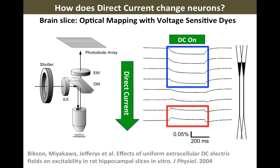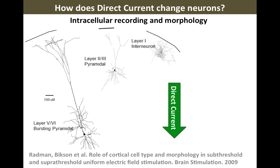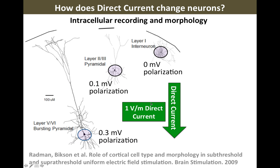How much is this seesaw polarization? We can ask that question using intracellular recording. These are examples of cells that are morphologically reconstructed, and we recorded from their soma during the application of direct current stimulation. In the soma, the most sensitive cells — the very large pyramidal cells — polarize 0.3 millivolts per 1 volt per meter of direct current stimulation. Other cell types, not as large, polarized even less — only 0.1 millivolt for the same field. Some cells, their somas didn't polarize at all when we applied stimulation.